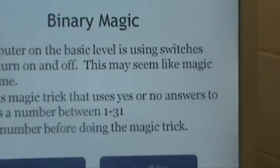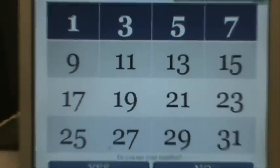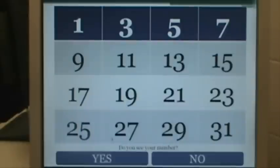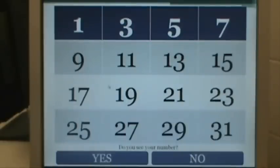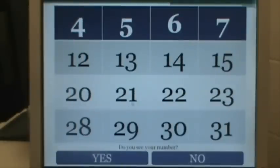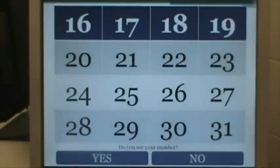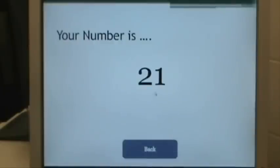So if I were to click on the magic trick - let's say we're doing 21. If you see 21, we'll click yes. Do I see 21? No. Do I see 21? No. Do I see 21? No. Do I see 21? Yes. Your number's 21.